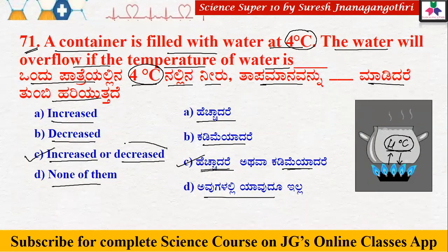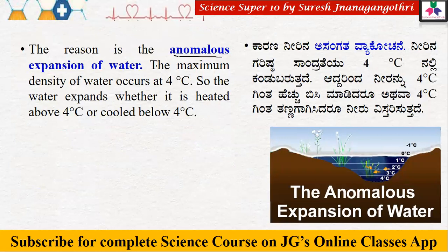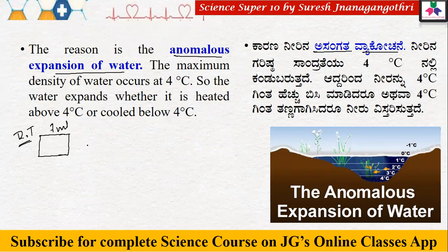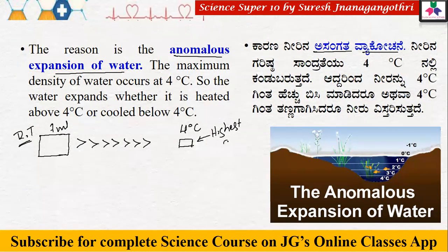One doubt arises: if we decrease the temperature, how does it overflow? To understand this concept clearly, this is called the anomalous expansion of water. Let's say we have one ml of water. At room temperature, one ml of water occupies a certain space. As we decrease the temperature from room temperature down to 4 degree Celsius, the water occupies less space — this is the highest density of water.